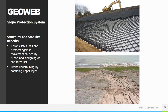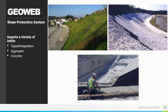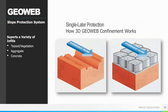The structural benefits of using GeoWeb on slopes include that it will encapsulate infill and protect it against movement caused by runoff and sloughing of saturated soil. It will also limit undermining by confining that upper layer of fill. GeoWeb can support a variety of infills — topsoil and vegetation, aggregate, as well as concrete. The cellular network creates check dams that protect the upper soil or aggregate layer from hydrological erosive forces, such as dam overtopping that can impact unconfined material.